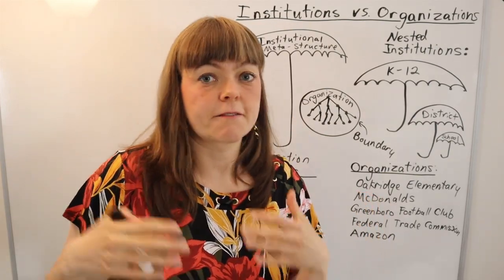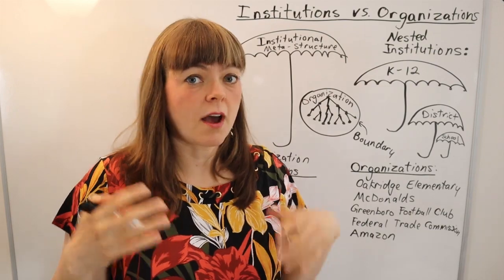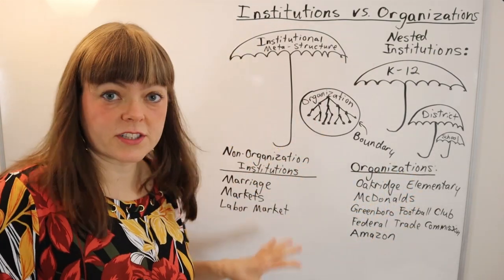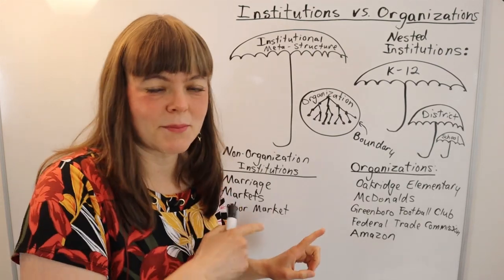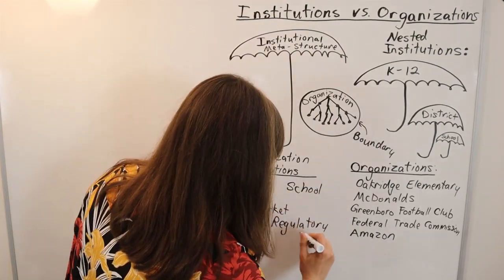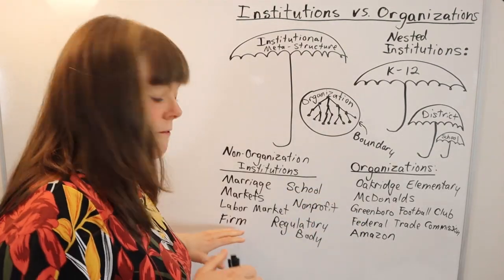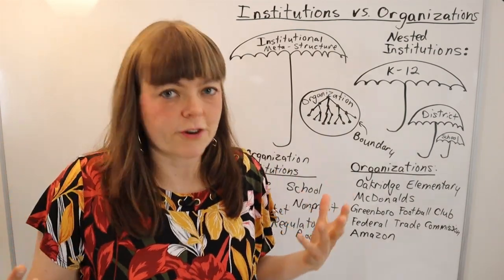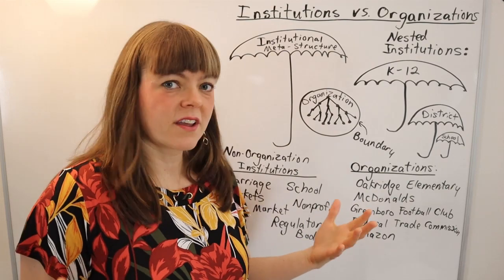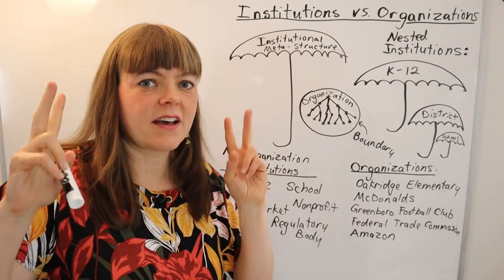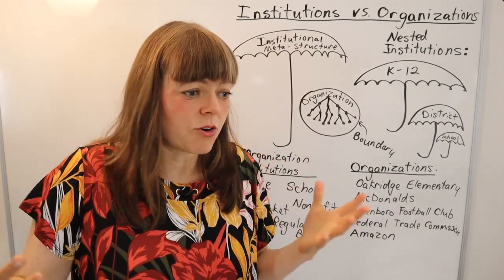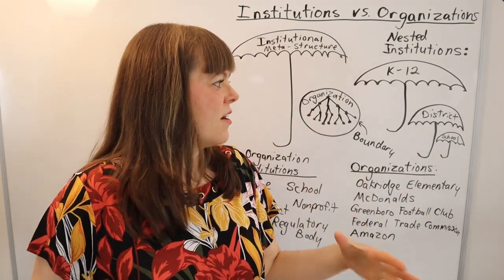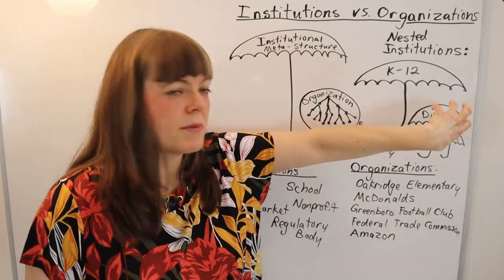When talking about nested institutions, organizations are almost always going to be nested under some bigger institution that structures what type of organization this is. Is this a firm? Well, the institution of the firm is not an organization — it's a general institutional structure, more like a concept that structures organizations that are sort of sub-institutions.